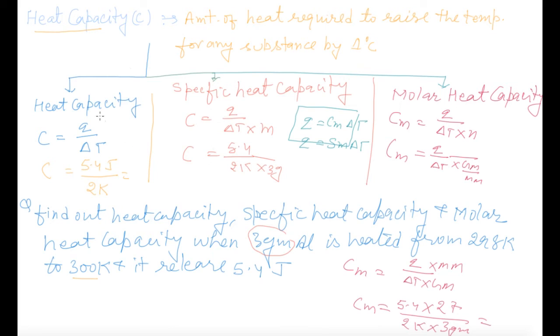This is heat capacity and its types. There are three types: normal heat capacity, specific heat capacity per gram, and molar heat capacity per mole. In this way we have done heat capacity. The next point we are going to do is the relationship between Cp and Cv, or the proof Cp minus Cv equals R. Goodbye.